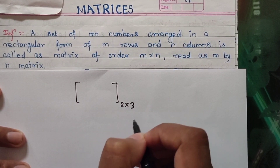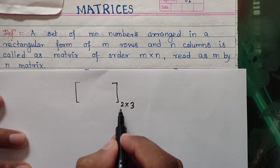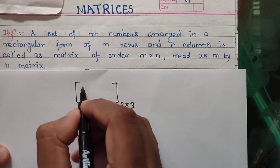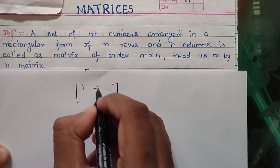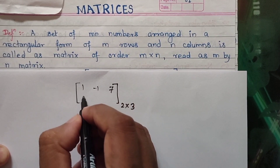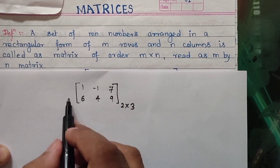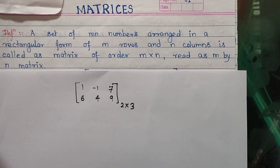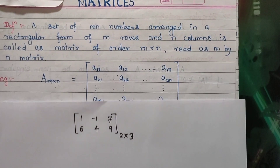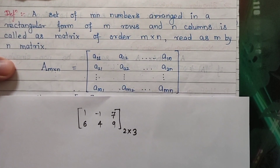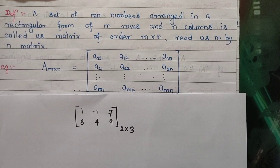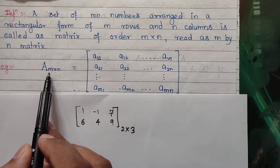Whenever we say a matrix of 2 by 3, how many rows? 2 rows, and how many columns? 3 columns. So 2 rows and let us write elements: 1, -1, 7, 6, 4, 9. So how many rows? 2, and how many columns? 3. This is the matrix of order 2 by 3. If you want to see the general matrix, M rows and N columns — that is why it is written as M by N.